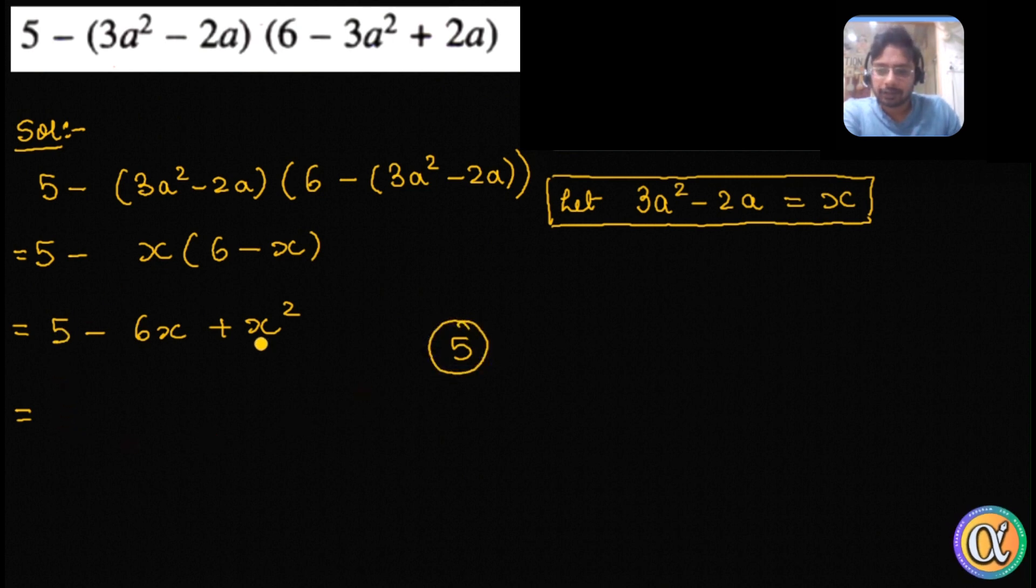Product of corner is 5, or 5x squared, so think of two numbers whose product is 5 but sum is minus 6.